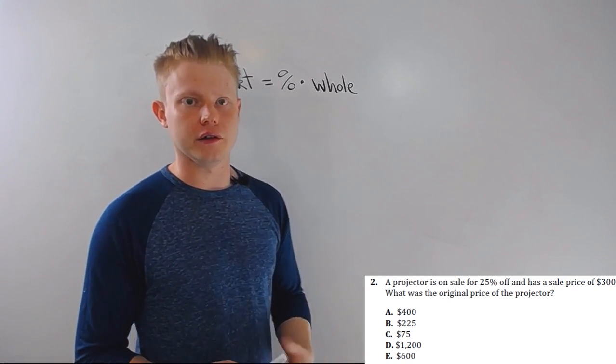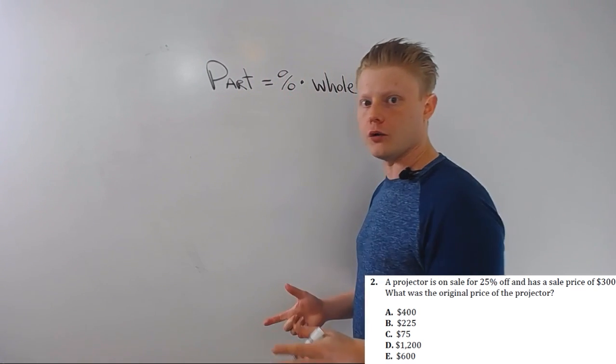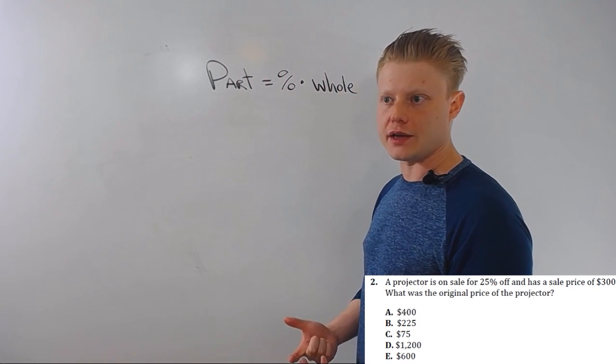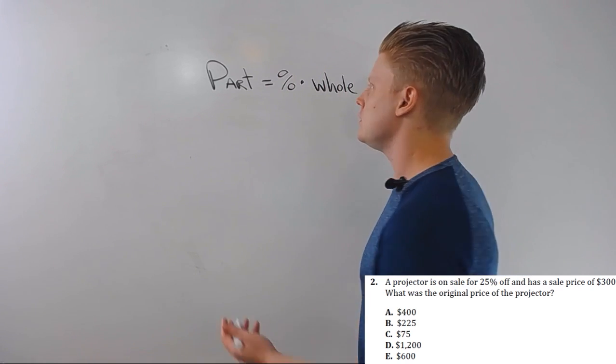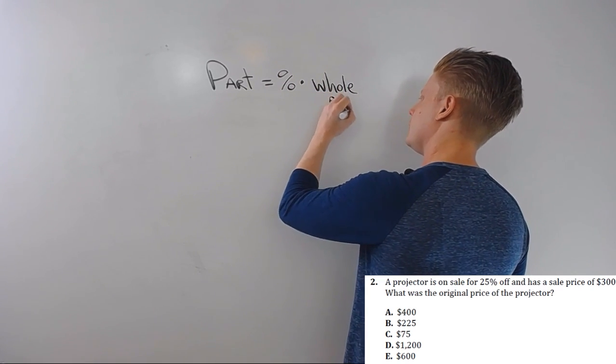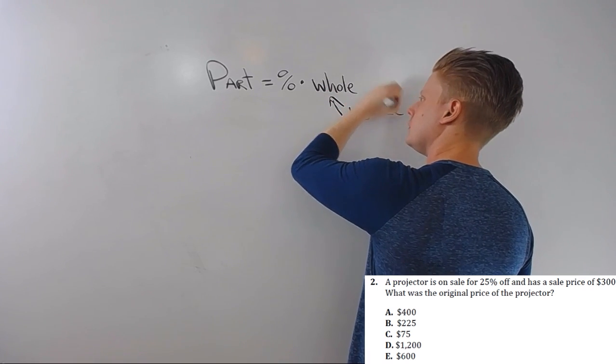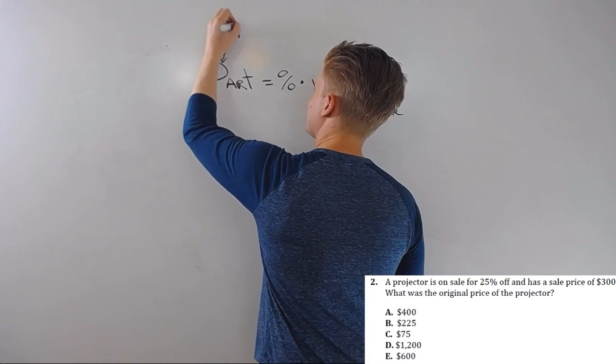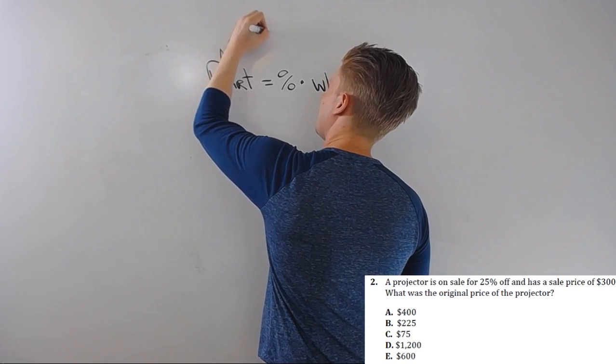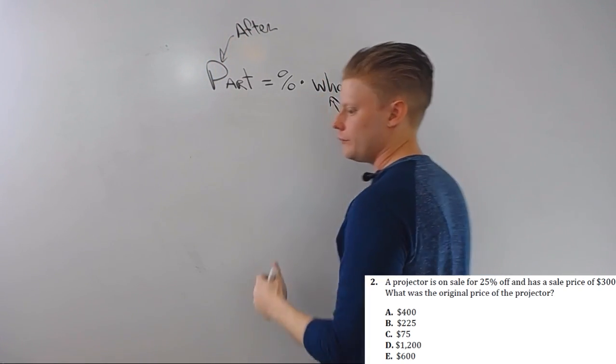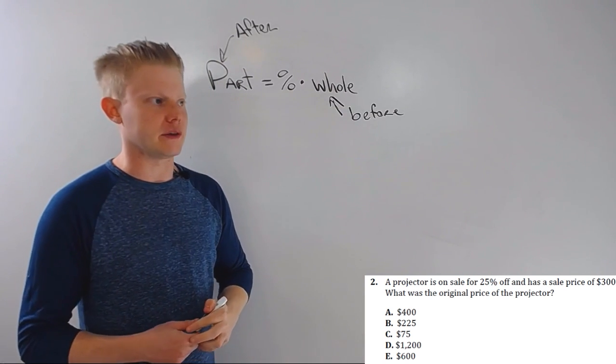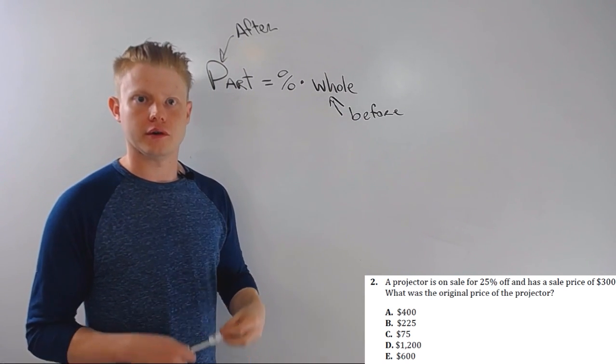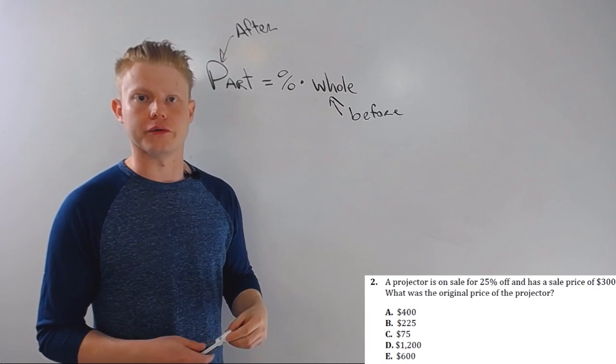That's easier said than done. So, there's a helpful guide in the book about words that indicate part and whole, but for the sake of the video, just remember that whole is before the percent is applied, and part is after the percent is applied. Now even though I call it part and whole, the part can be bigger than the whole, as it would be in the case of a tax, an increase, growth, in real world terms.